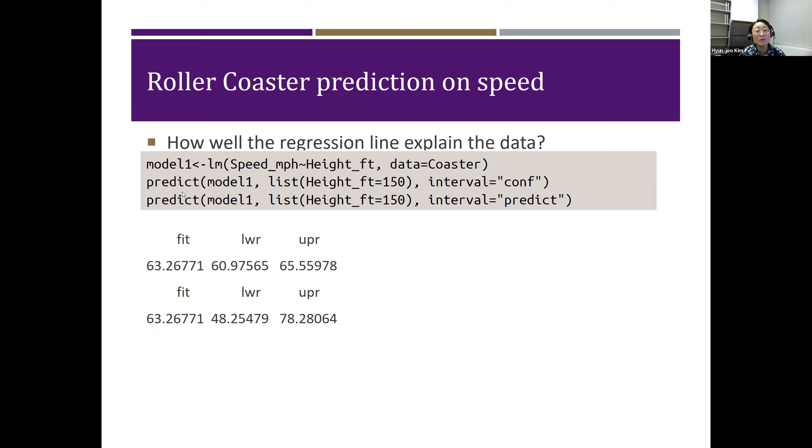In the predict function, a specific x value goes inside of the list option, and we can specify whether we want to calculate a confidence interval or prediction interval. Unless it is specified differently, 95% is default.